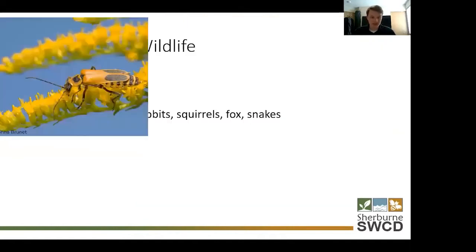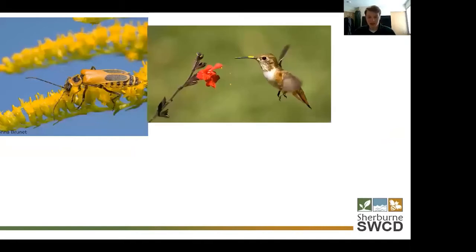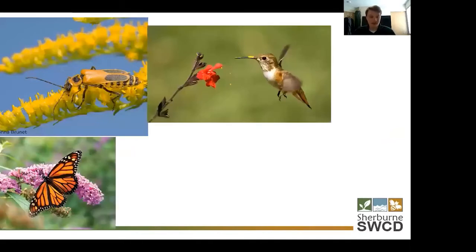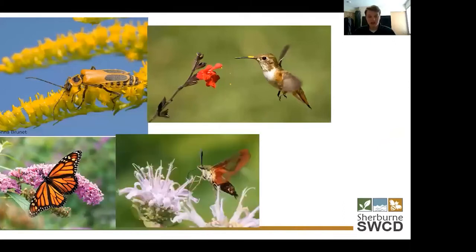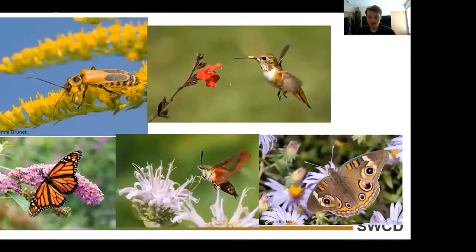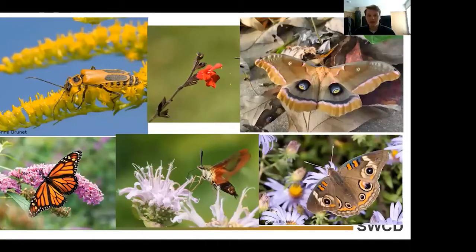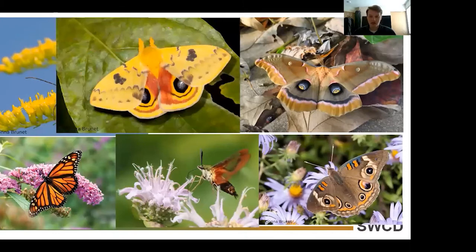It's also beetles. It's birds like hummingbirds, as well as moths and butterflies. Here we have the monarch, the hummingbird clearwing moth — a very cool moth that actually has clear wings, as you can see in the photo. The common buckeye moth, the polyphemus moth. The polyphemus moth is specifically associated with hardwood forests and is one of the largest moths in Minnesota. It's very susceptible to light pollution because it uses the moon to help locate mates during its reproductive flights. And we also have the io moth.